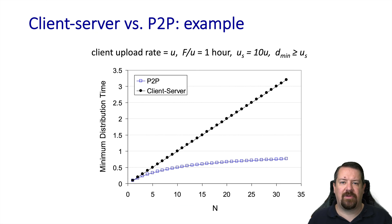So let's compare those on a plot. We see the linear growth of the time it takes for a server to distribute the file to N peers, and we also see that as more peers join the peer-to-peer network, the time added to transfer the file to each additional peer decreases. So the marginal increase gets lower, and this performs much better than a linearly increasing distribution time.